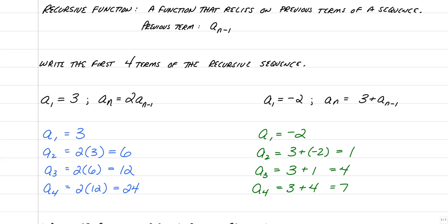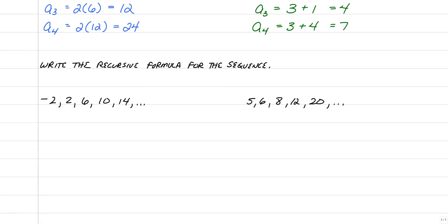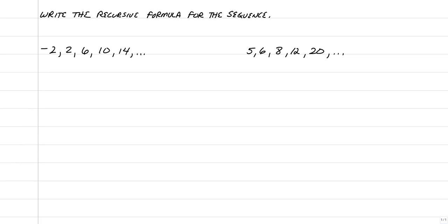The next thing we're going to do is work on a recursive formula for a sequence. This is where things get a little tricky, because you have to determine whether the sequence is linear, quadratic, or exponential. You also need to think about what's going to give you a sub n using the previous term. And if you're writing a recursive formula, you absolutely must state what a sub 1 is — in this case, negative 2.